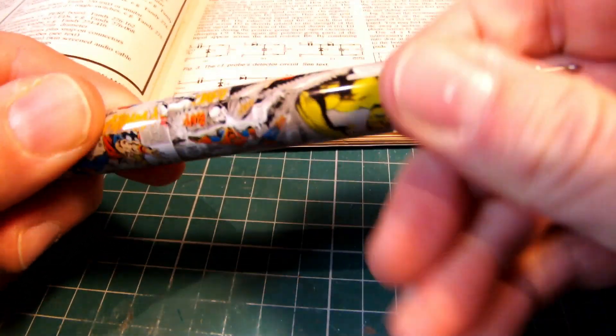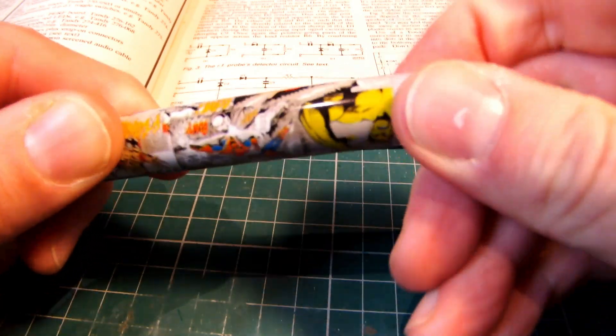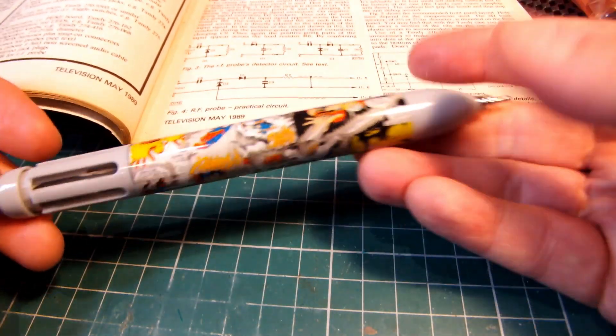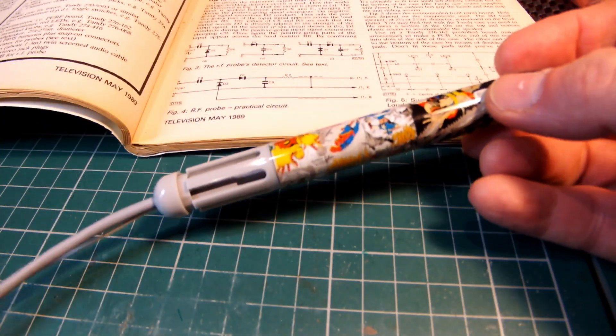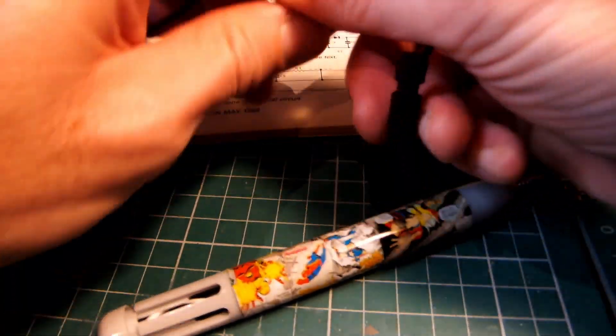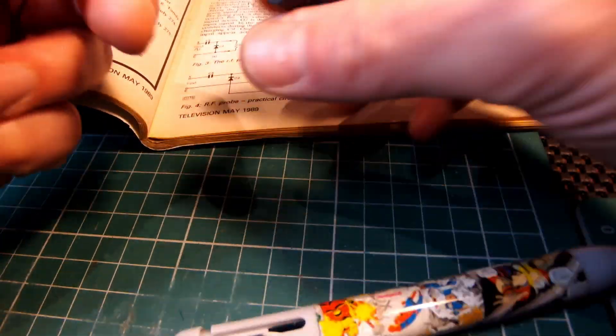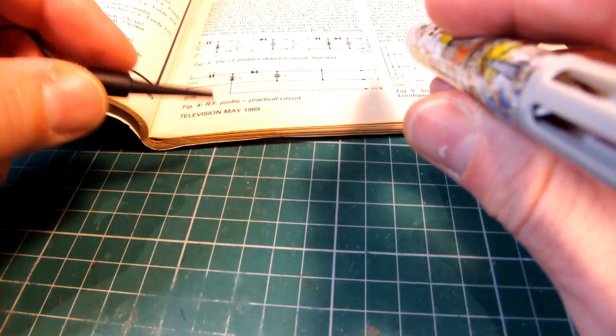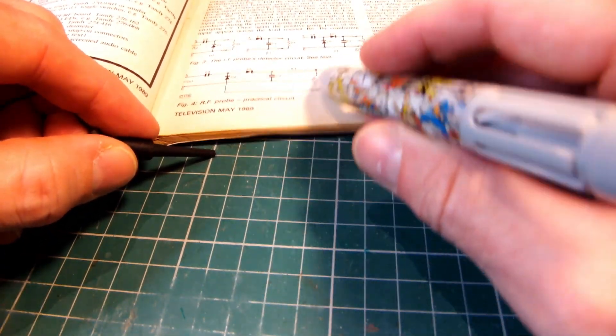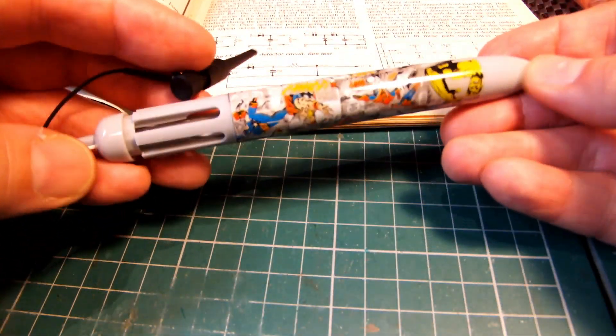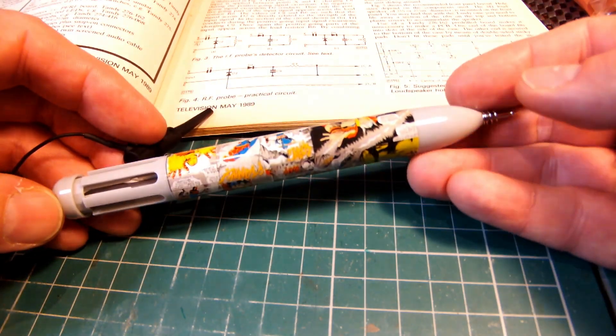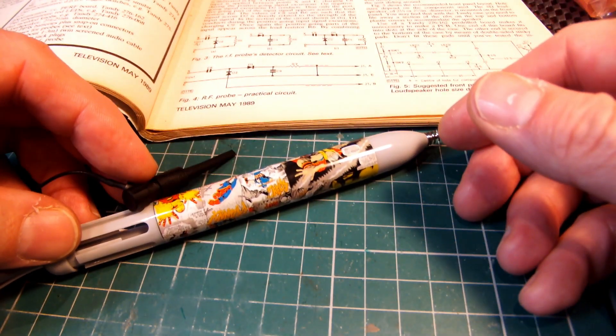We screw it up - there we go - so that becomes the RF probe. That little white wire is the ground contact point. You would ground it and then sample your circuit this way. That's the first part of the signal tracer. Let's see how this video evolves when I build the rest of it.